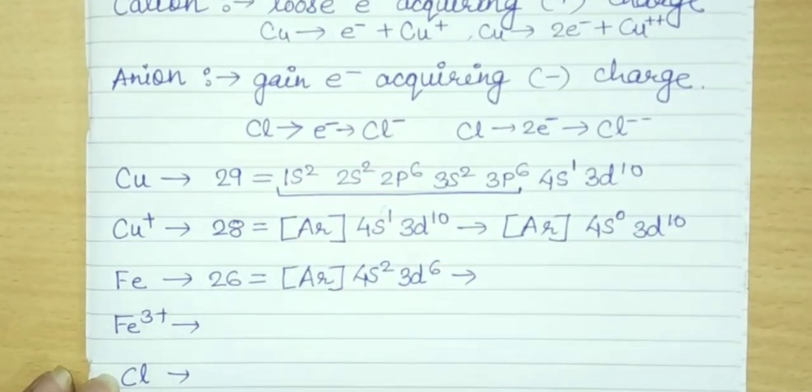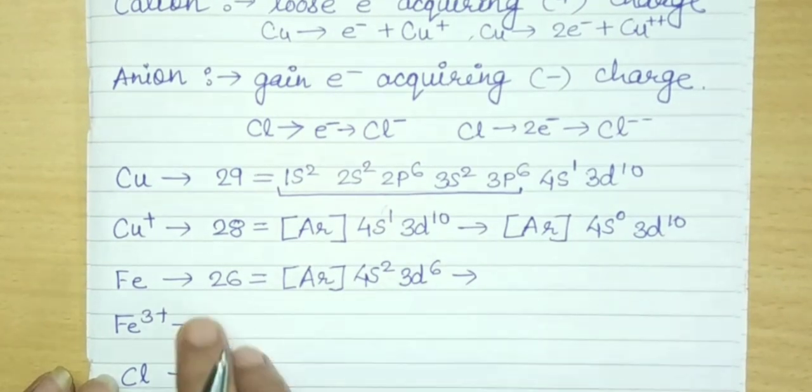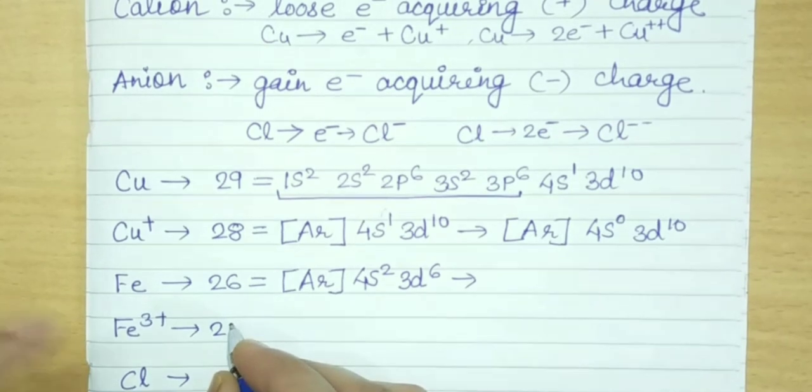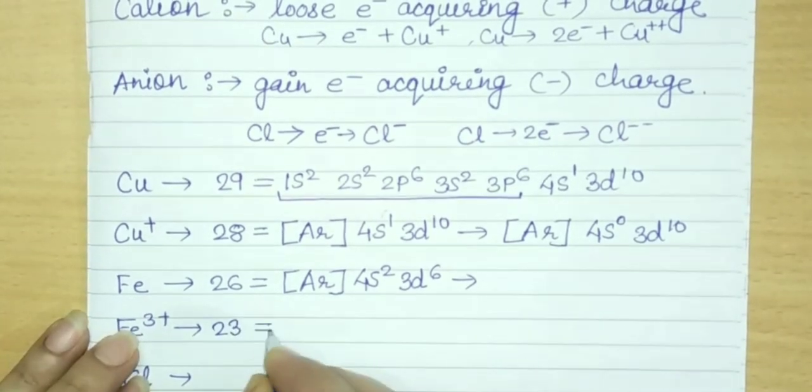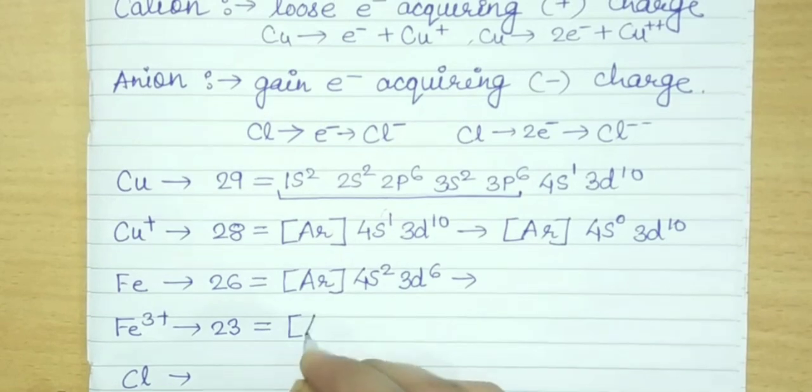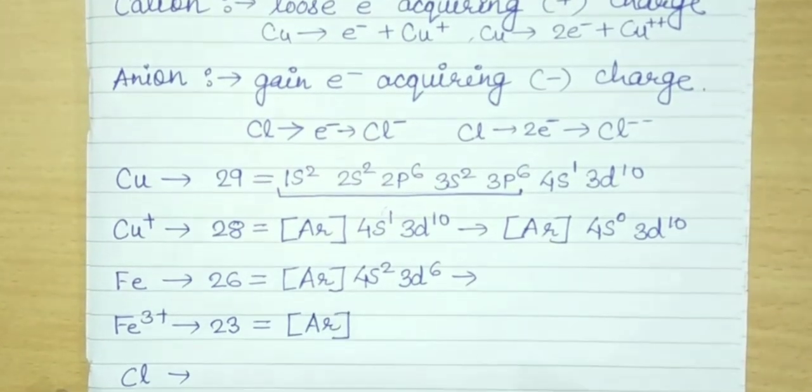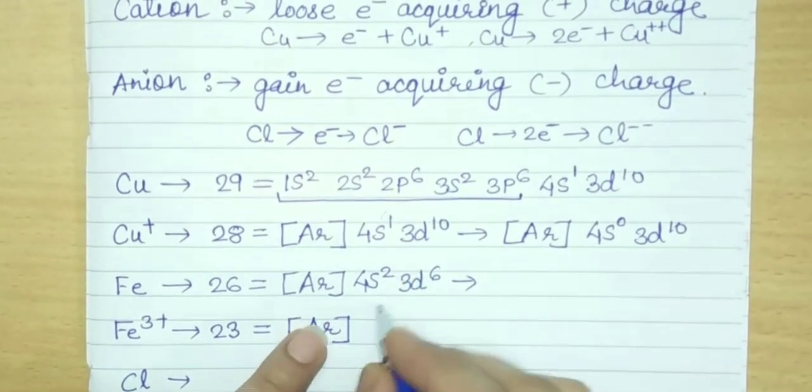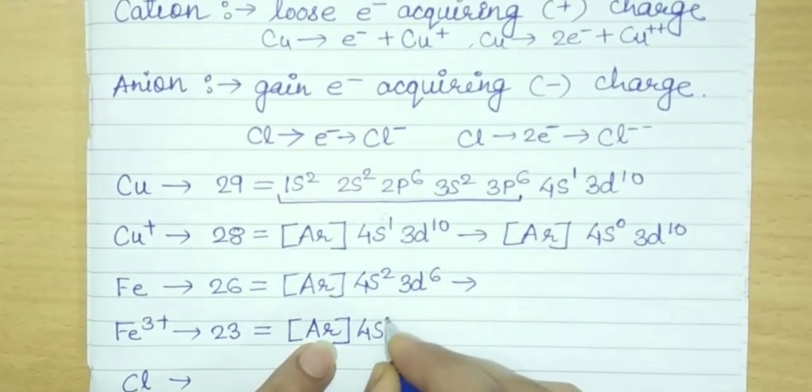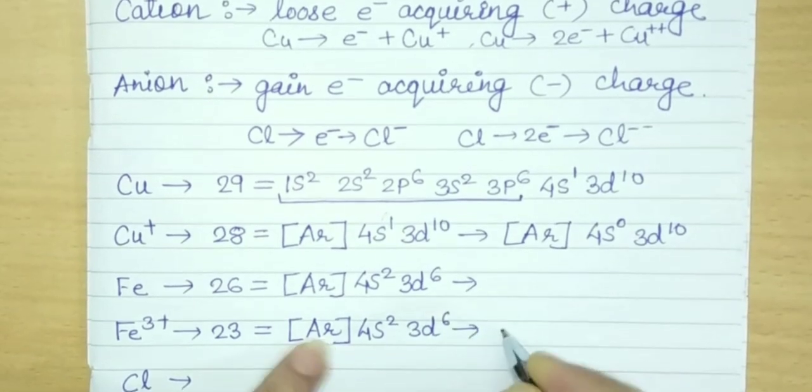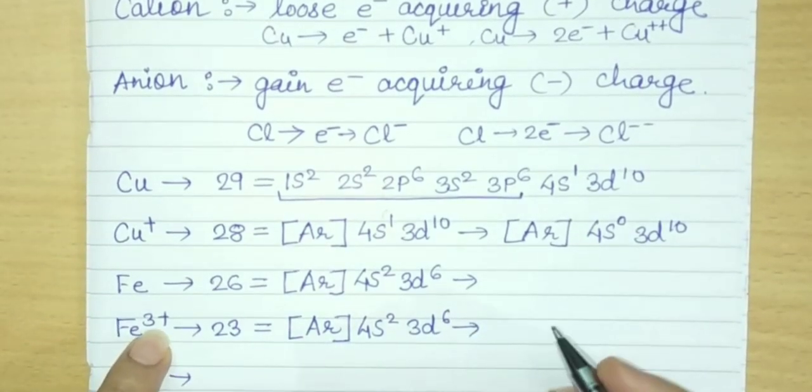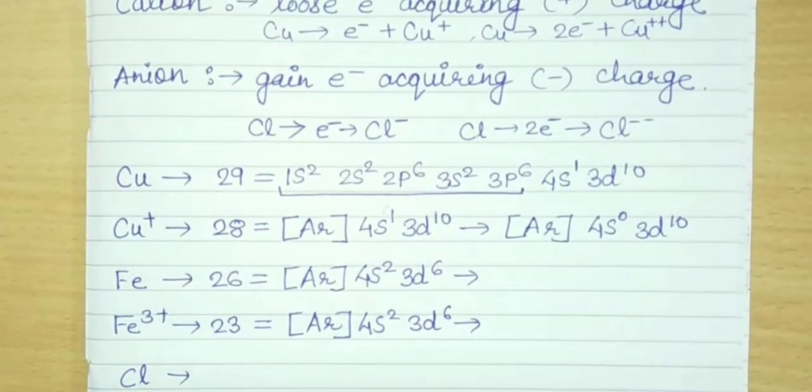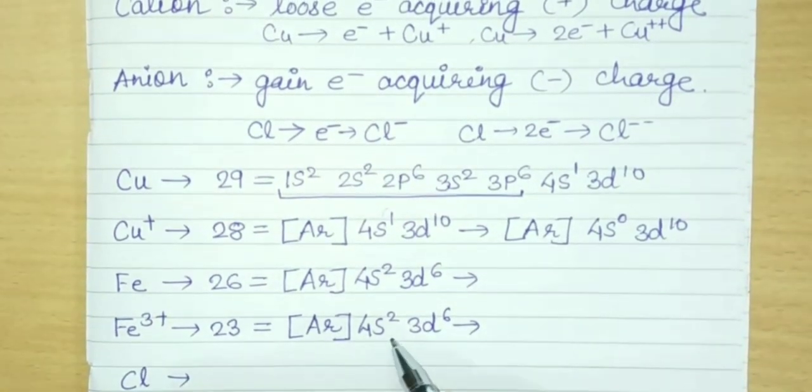Now Fe has lost 3 electrons. So when 3 electrons are lost, from which orbital will the electron be removed first? We will see here. Fe has lost 3, so its atomic number will become 23. So I will write 23 and then Ar, argon.